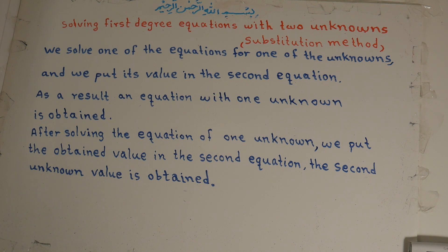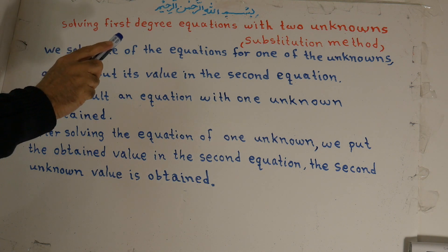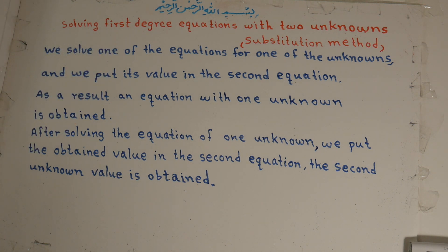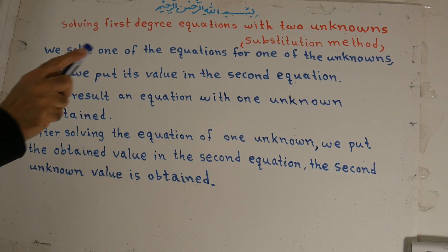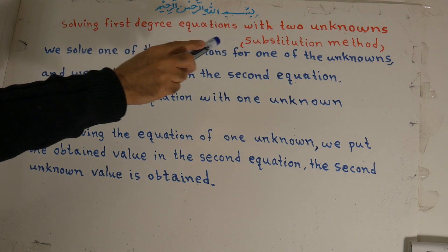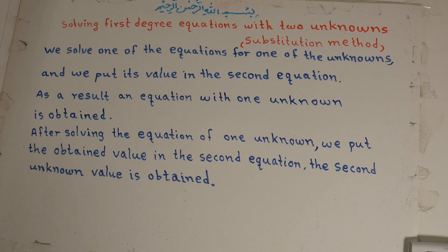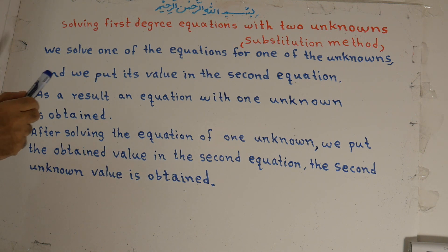Hi dears, welcome to math class. Our topic is solving first-degree equations with two unknowns — the substitution method. We know from previous lessons that there are five methods for solving first-degree equations with two unknowns or simultaneous equations. This is the second method: the substitution method.